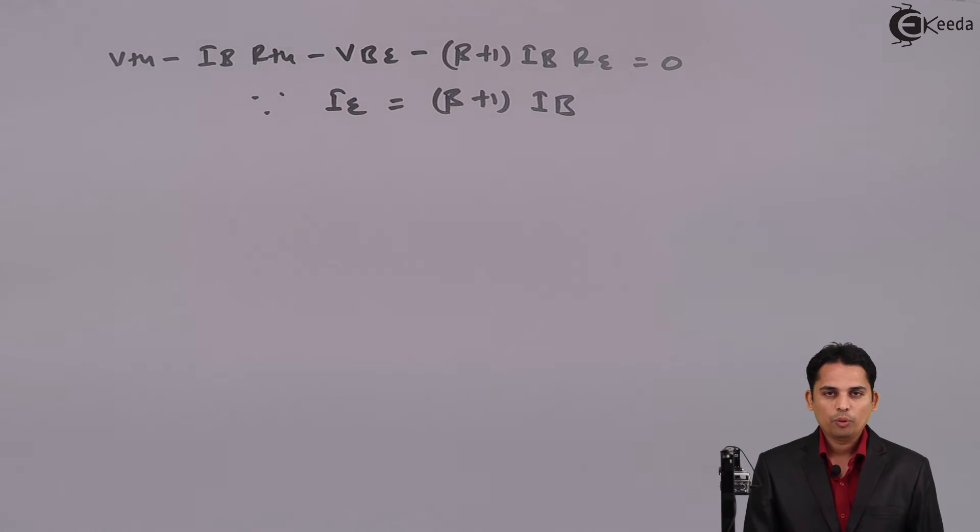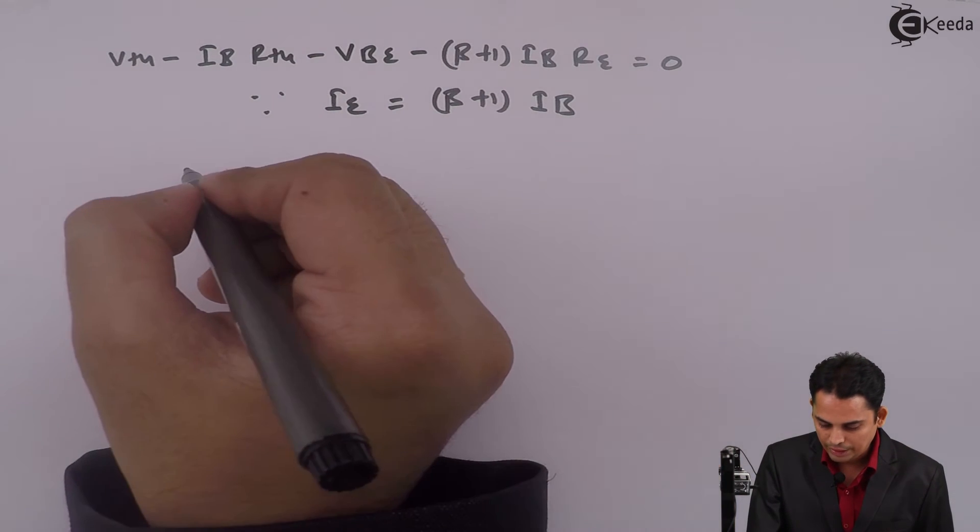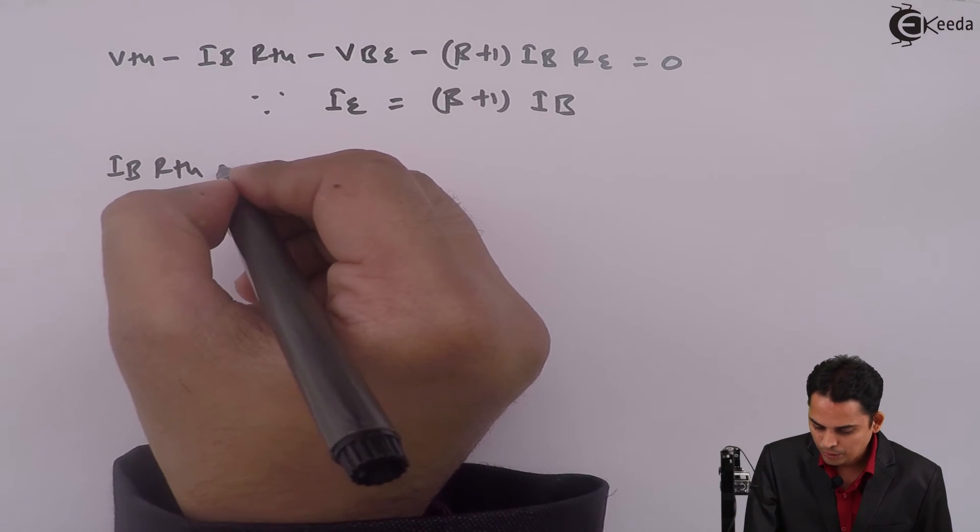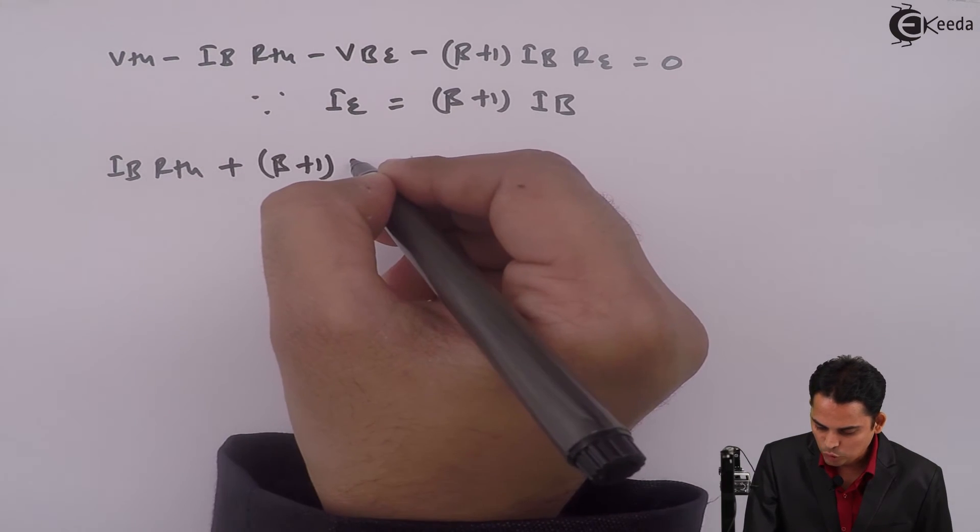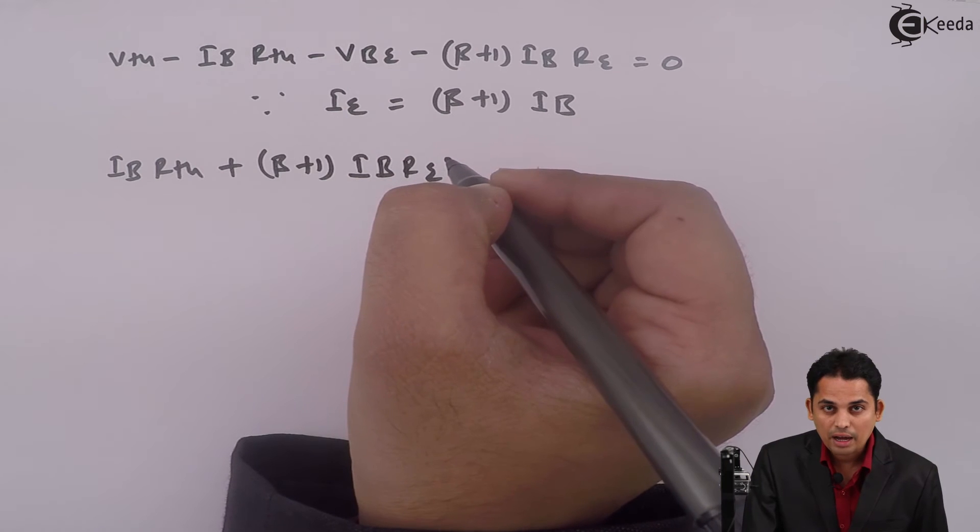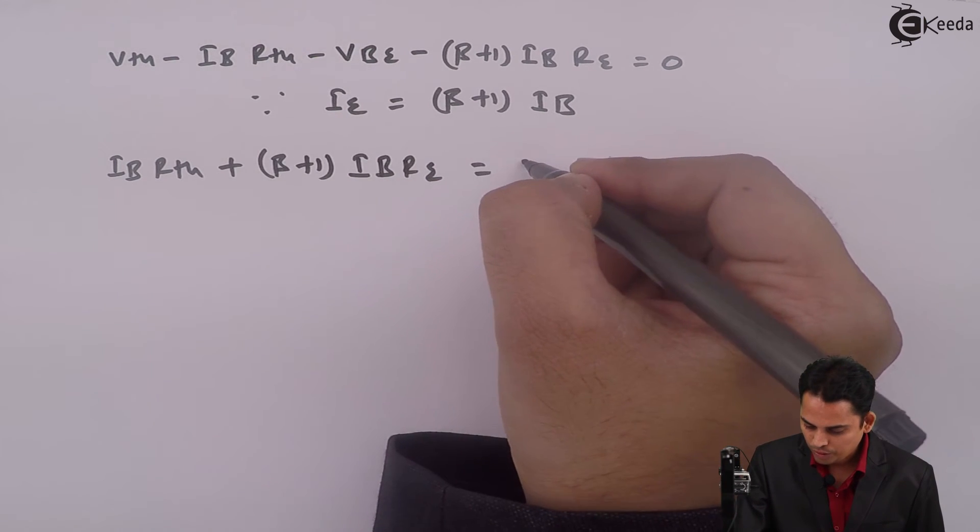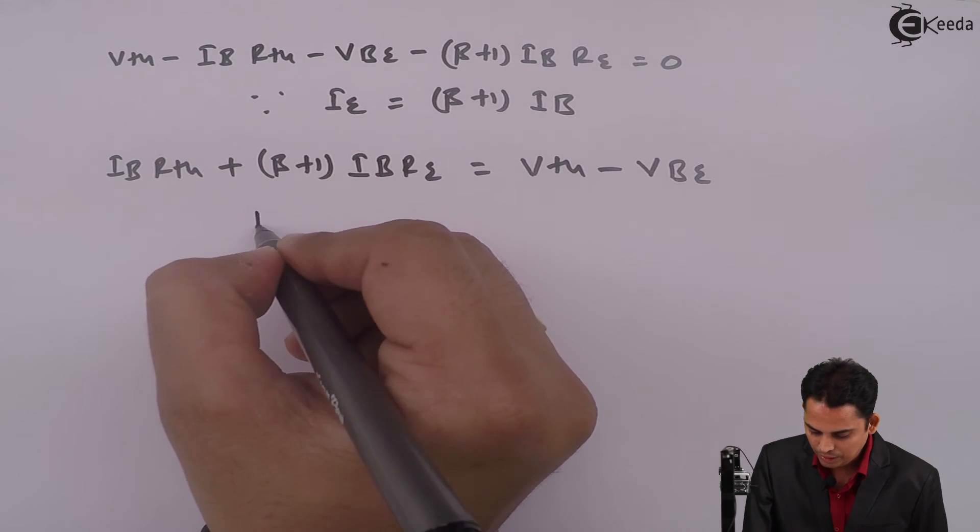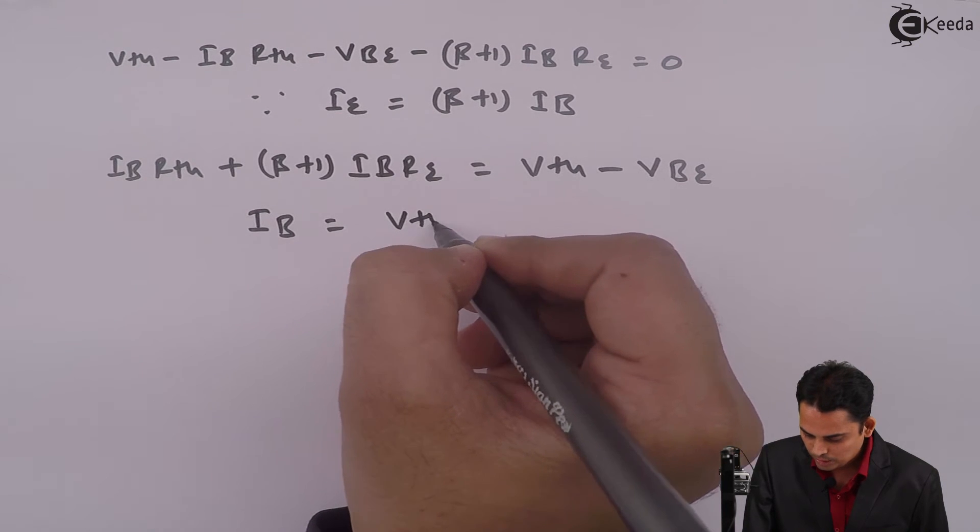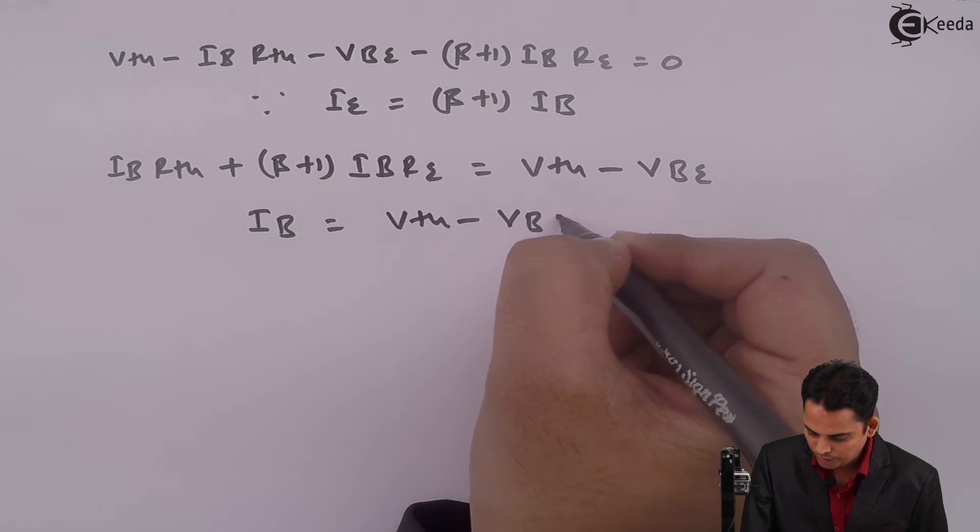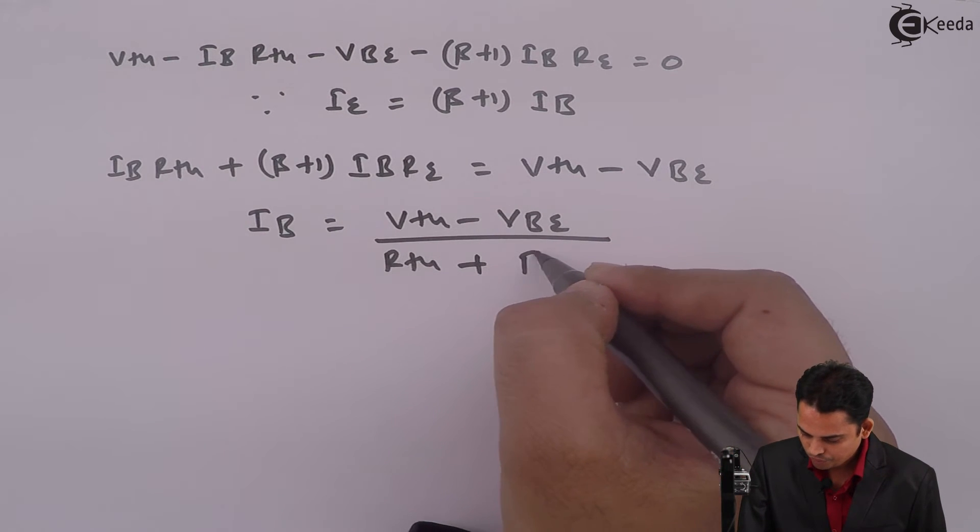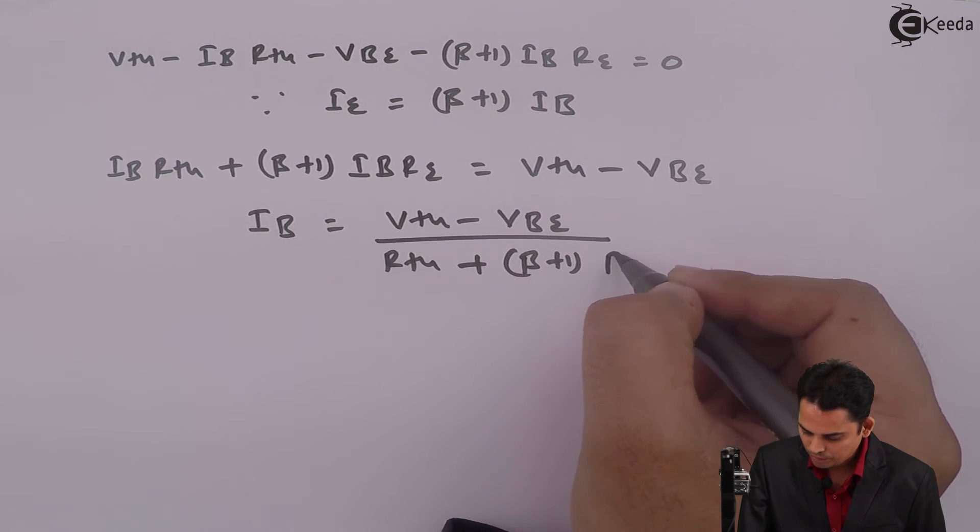Now we will have base current on the left-hand side whereas all voltage terms on the right-hand side. So we will get: IB into Rth plus (beta plus 1) times IB into RE equals Vth minus Vbe. Hence, base current IB is equal to (Vth minus Vbe) divided by (Rth plus (beta plus 1) times RE).